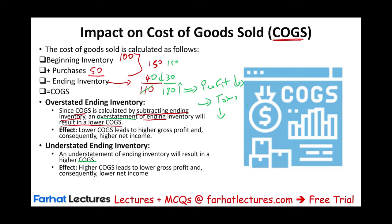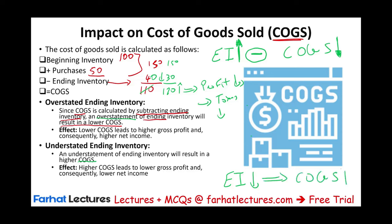Make sure you understand this. To summarize: ending inventory and cost of goods sold have a negative, or inverse, relationship. If you overreport ending inventory, you understate cost of goods sold, and vice versa. If ending inventory is understated, cost of goods sold is overstated. They work in the opposite direction. The best way to understand this is through an example.